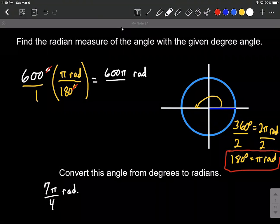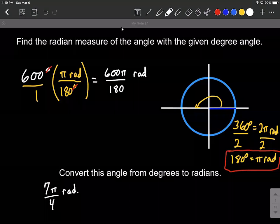And then multiplying our denominators, we have 1 times 180, which equals 180. From here, we can do a little bit of simplifying. You may notice that these are both multiples of 10. So we could pretty easily move it down to 60 pi over 18, still in radians.